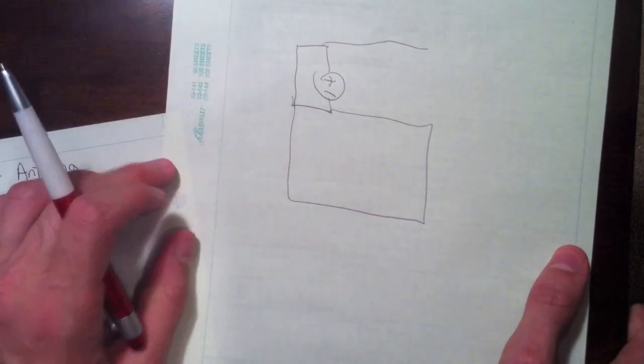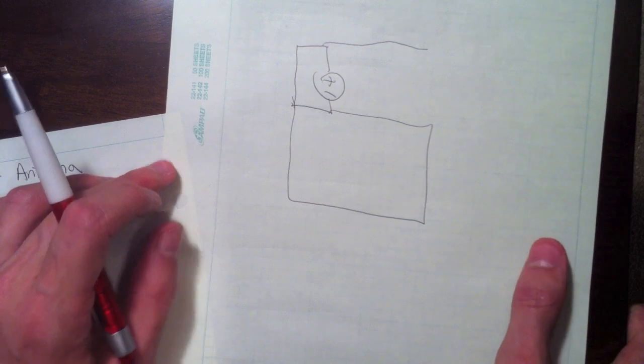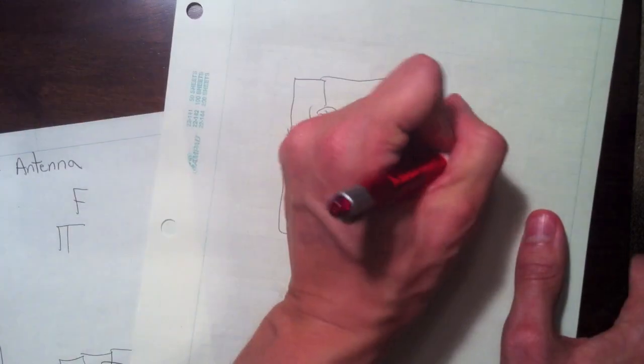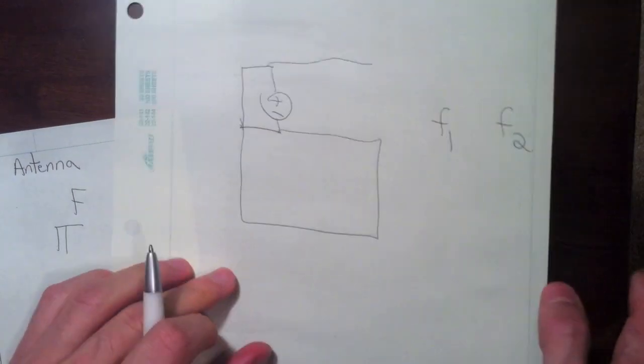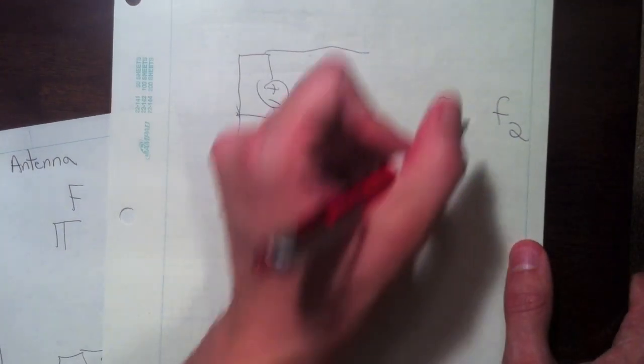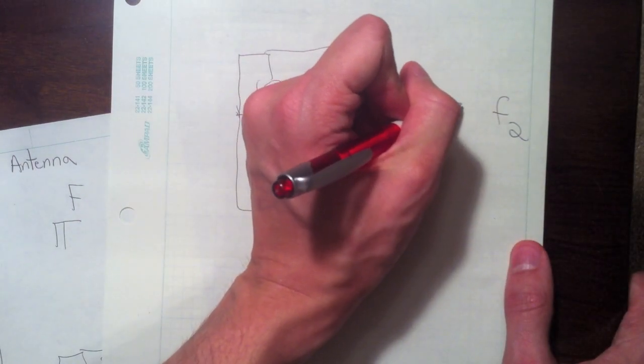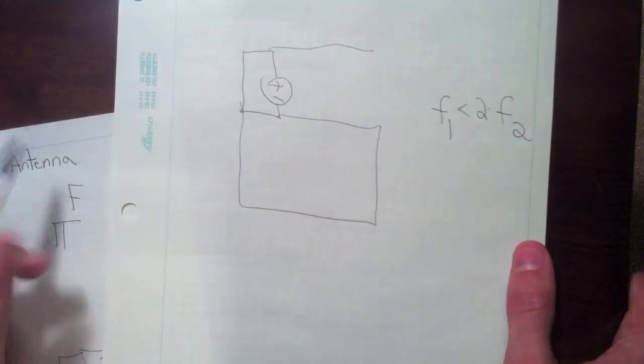Now what's interesting is, suppose we want this antenna to be dual band. We want it to operate at some frequency F1 and another frequency F2. Let's suppose F2 is at least twice as large as F1.